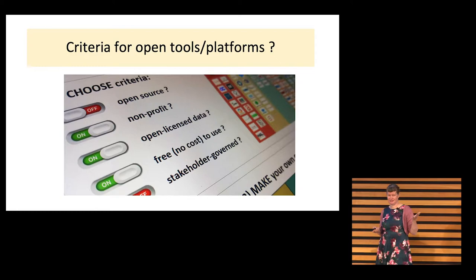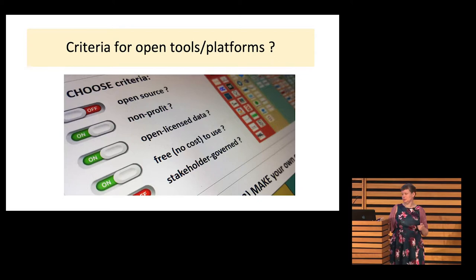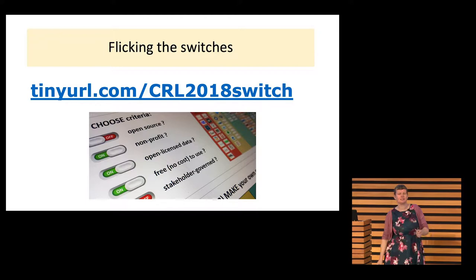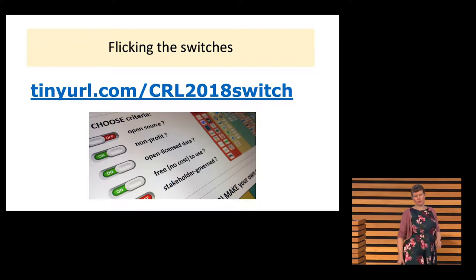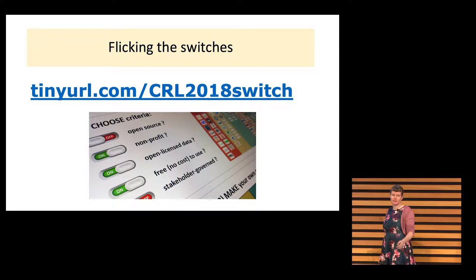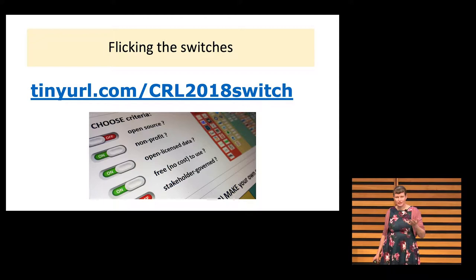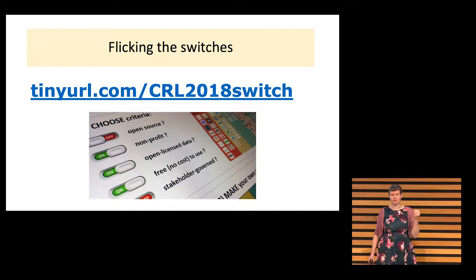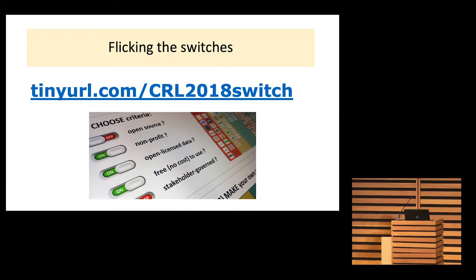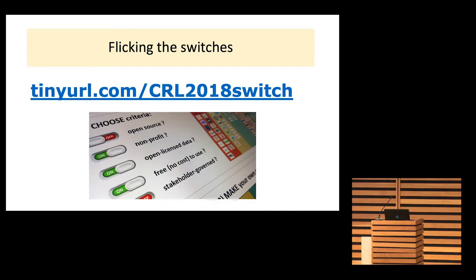And that's what I would like to ask you now. So if you would go — those of you who have a device and the Wi-Fi is pretty good here — if you go to this link, you should see a form with five checkboxes with exactly these five criteria. And I would like to ask you, when you think of open tools and platforms for scholarly communication, what criteria are important for you? You can tick all five, or none of them, or just one. What do you think is important? I'll take a couple of minutes to do that.